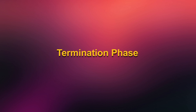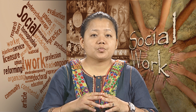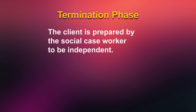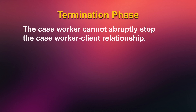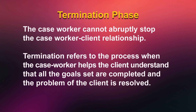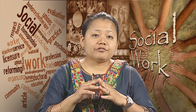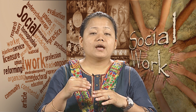Now let's move on to the fourth phase: the termination phase. Termination is an important phase in the casework process. In this phase, the client is prepared by the social caseworker to be independent. The termination phase will have to be planned properly and should be a gradual process — the social caseworker cannot abruptly stop the caseworker-client relationship. Termination refers to the process when the caseworker helps the client understand that all the goals set are completed and the problem is resolved, and that the earlier phases of studying, assessing, and intervening are complete and not ongoing.